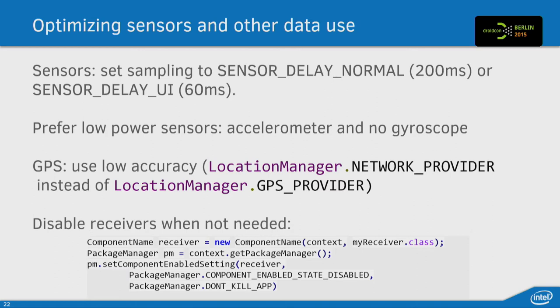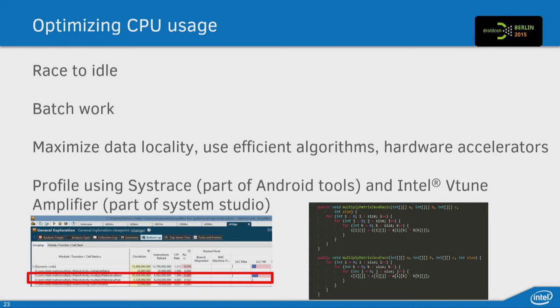For sensors, try not to use them at their maximum rate. The gyroscope consumes about 10 times more power than the accelerometer, so prefer the accelerometer if you can. Avoid using the GPS if you can afford it — for example by using passive providers, getting data used by other apps, or network providers. You can also disable receivers when you don't need them, so the system won't be woken up if no one's asking for an intent. Finally, to optimize CPU usage, race to idle is the main concept: do a maximum of work and then go idle — don't do work every second. Maximize data locality, using efficient data structures to maximize cache locality.